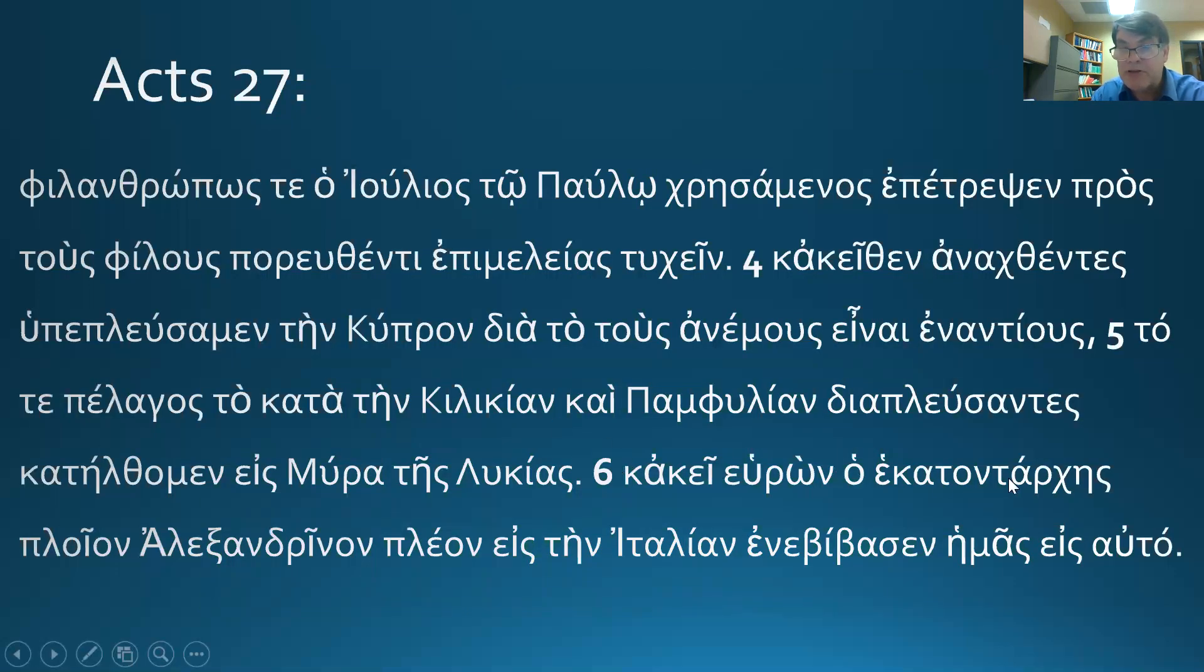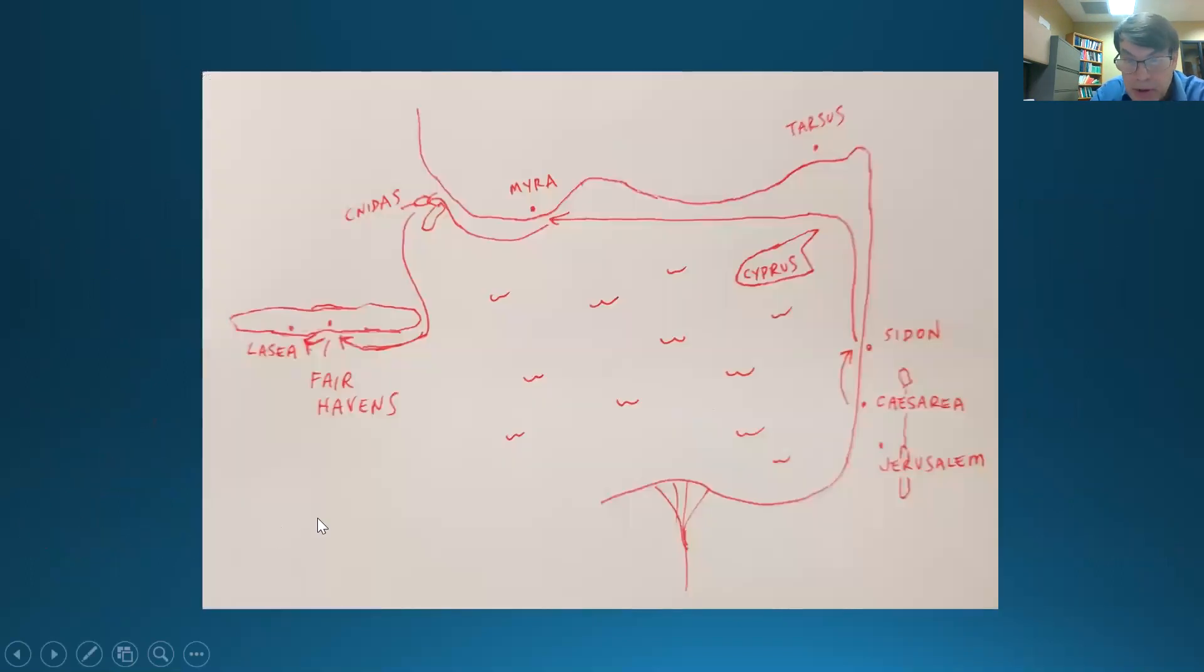Verse six. And from there, having the centurion, having found an Alexandrian boat. This is another crasis, Kai Eke, Kake, and there, something's gone on here. There's been a crash here. Having found, this is heuriskō. So the skō is missing. It's aorist. Alexandria, you probably know is down here in Egypt, over here. So an Alexandrian boat. I don't know. How did he get there? Wow.